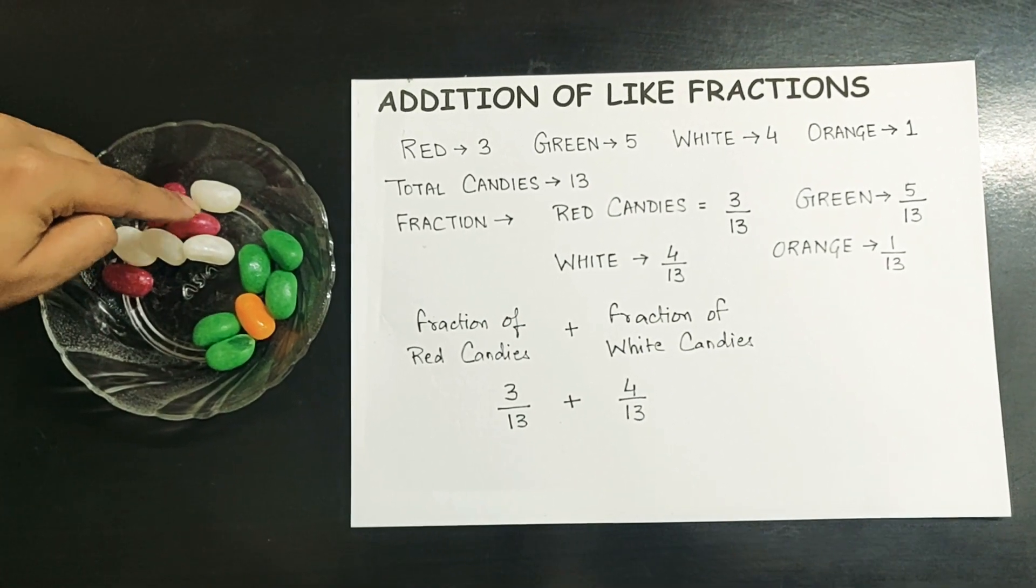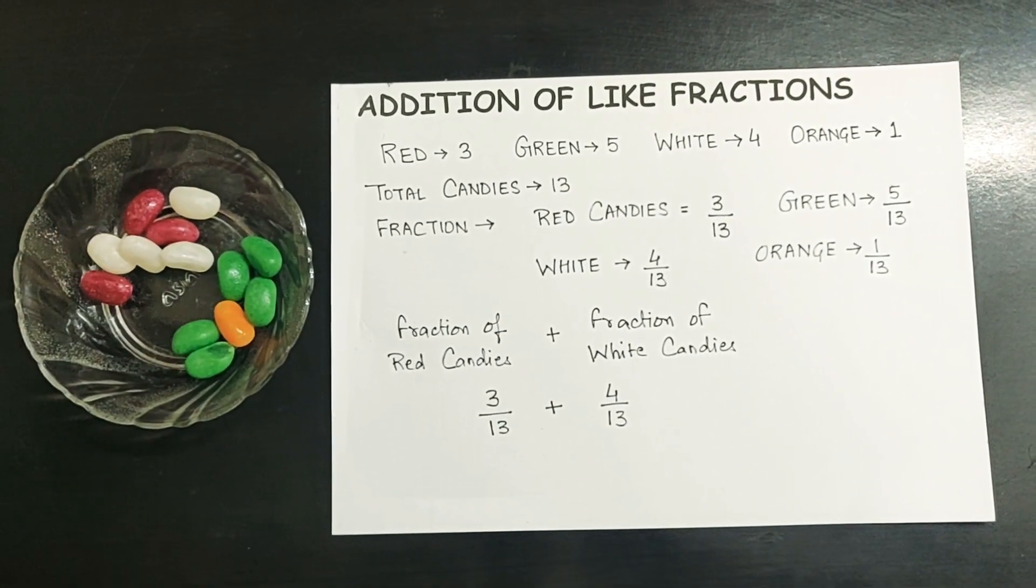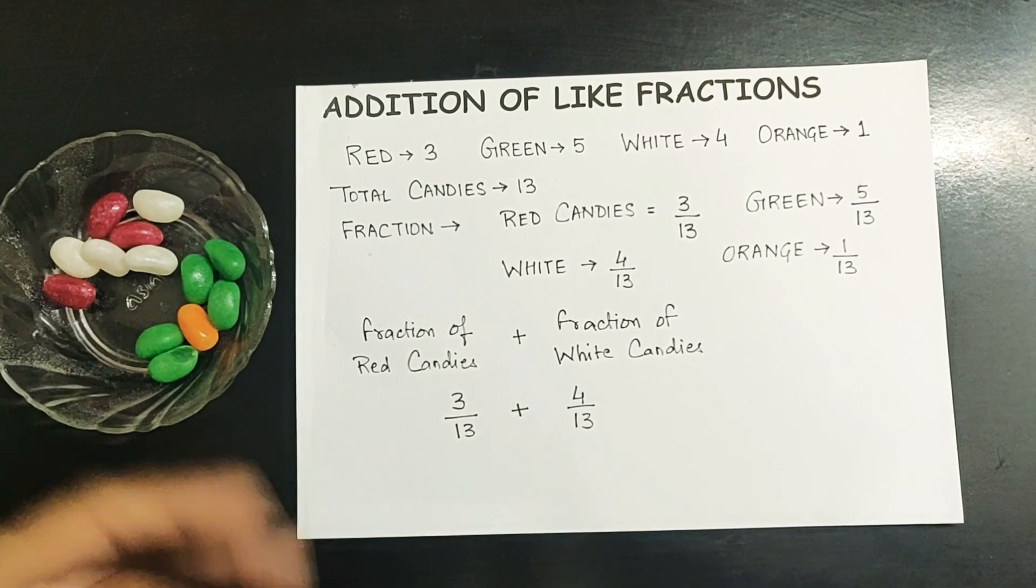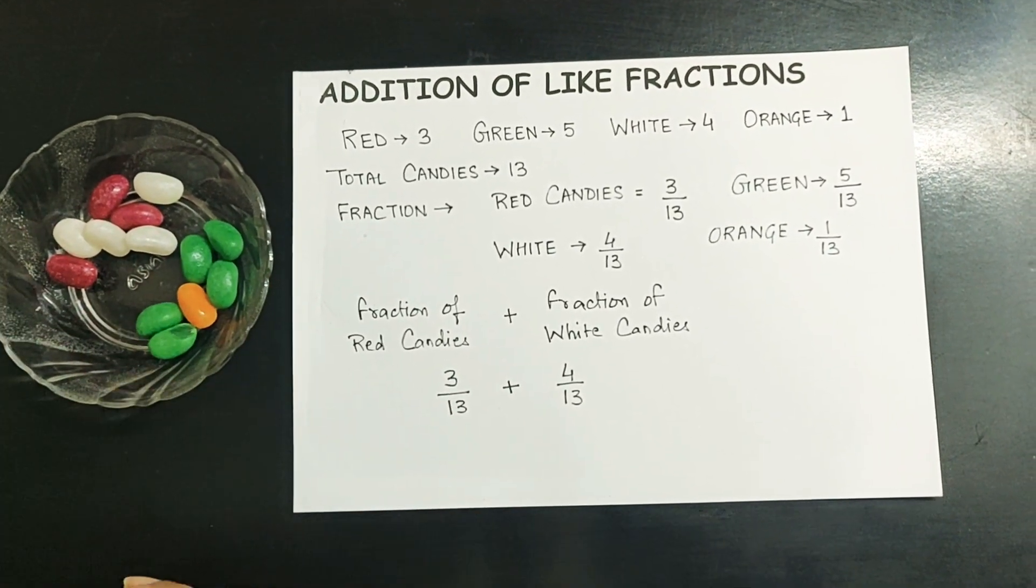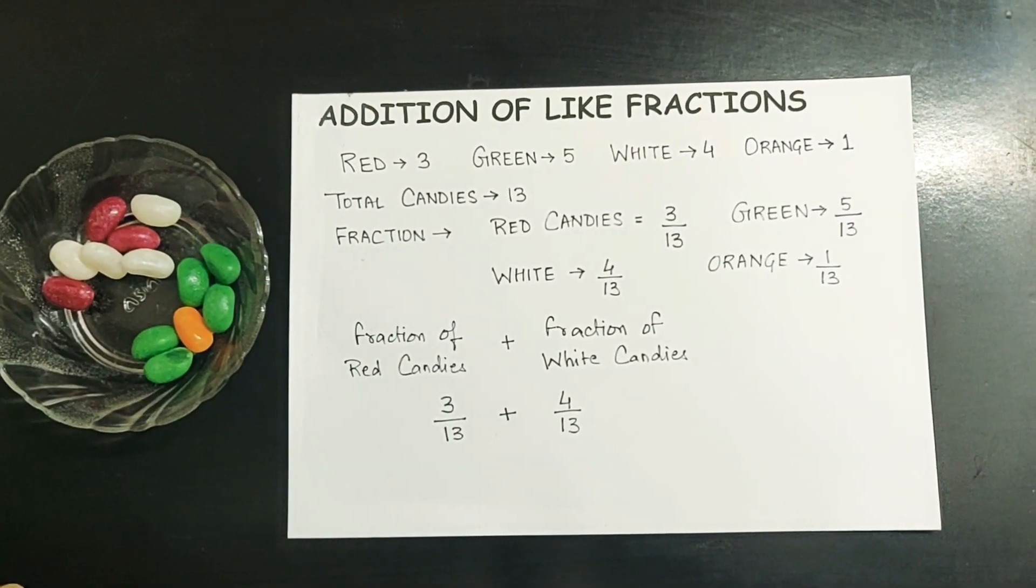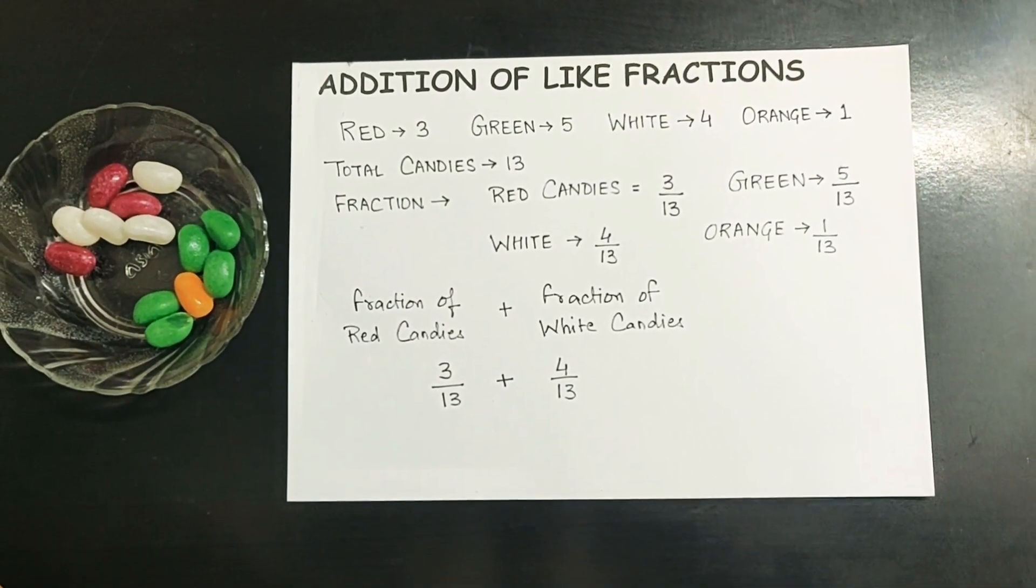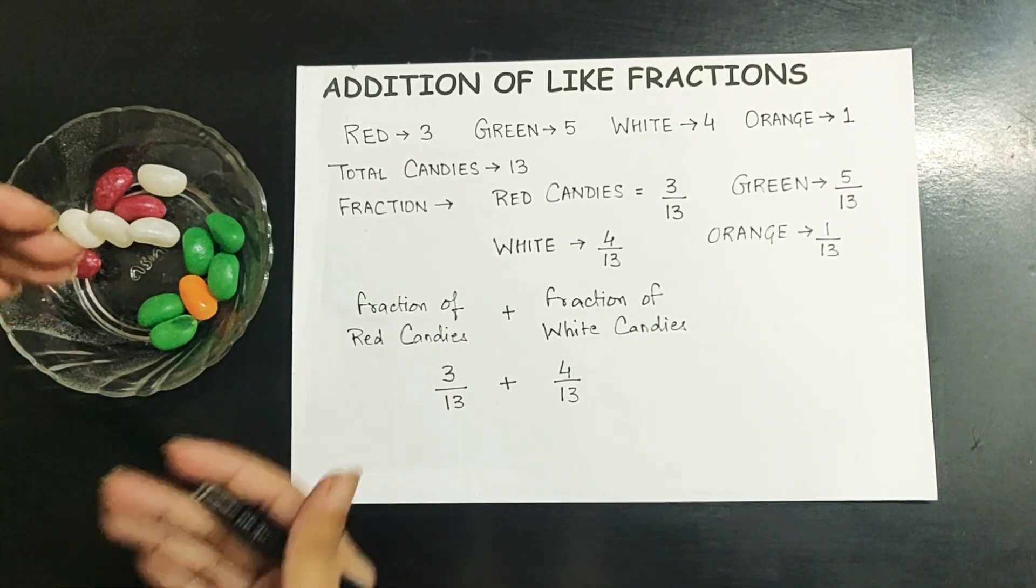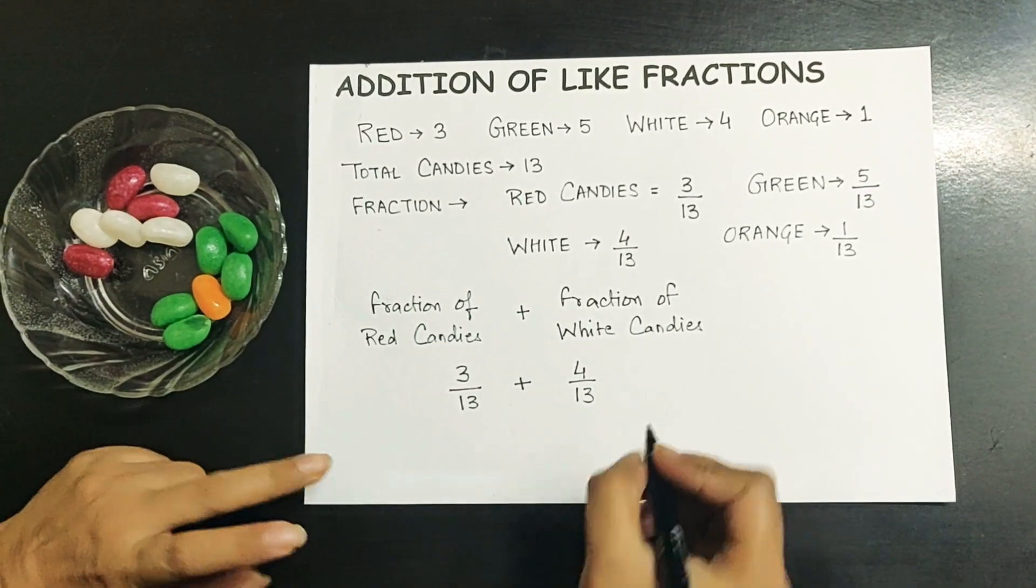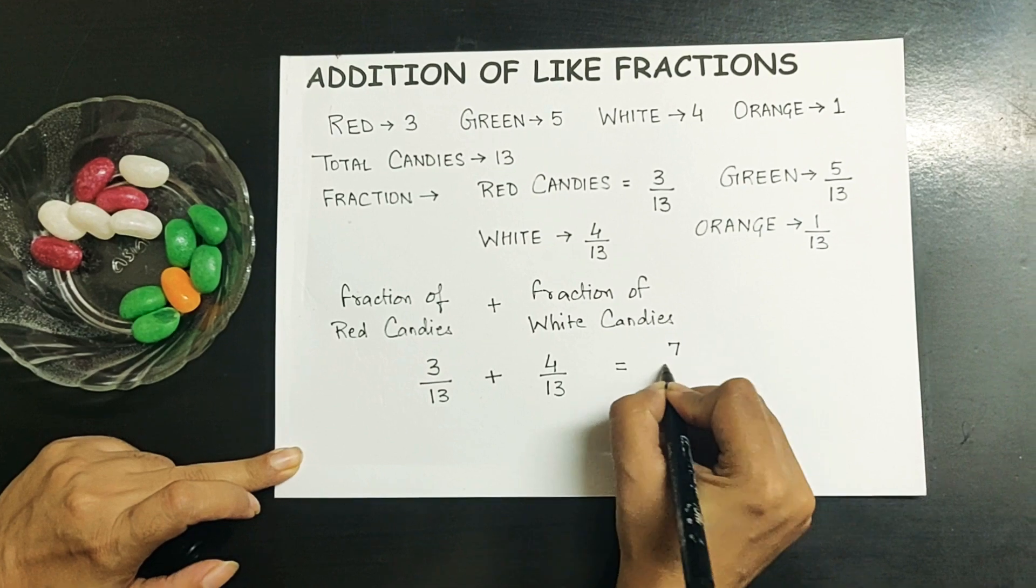What is the number of red and white candies? 1, 2, 3, 4, 5, 6, 7. In all there are 7 total. If we add only the red candies and white candies, there are total 7 candies.